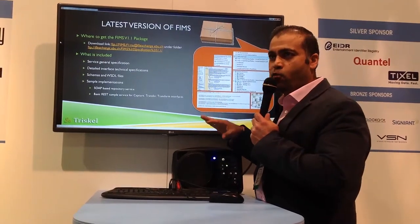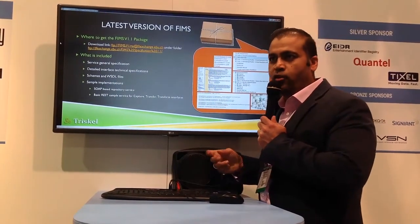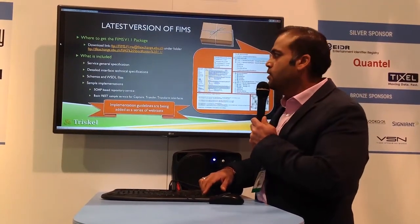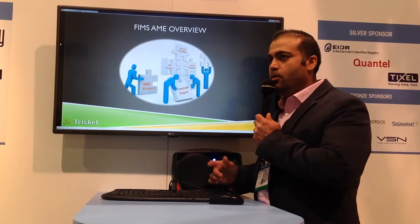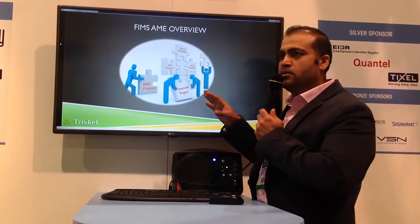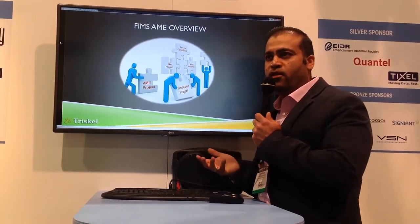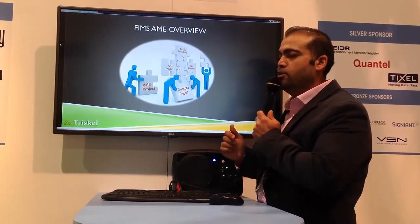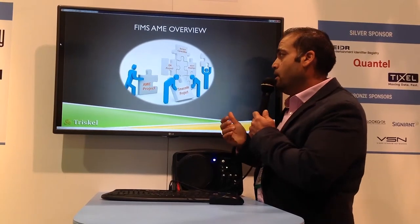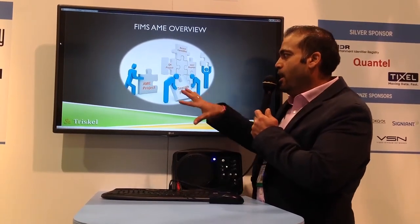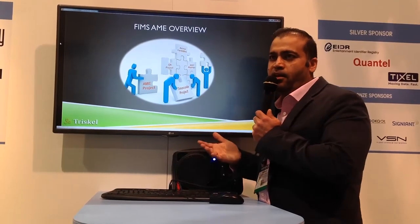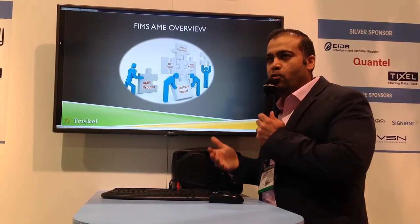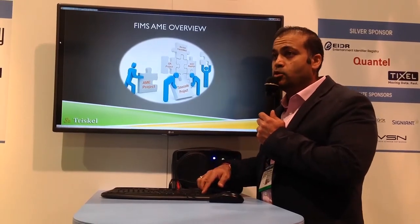Now that we've given a basic overview of what FIMS is, the next thing we're going to get into is AME. AME is kind of like a puzzle that we're trying to put together within FIMS. There are building blocks — the QA project, the service capabilities, the REST mapping, time code. AME is just one piece of a puzzle, but it's not the end. There are going to be multiple services that can also come about in the future that we will be developing as time goes on.